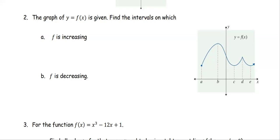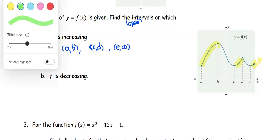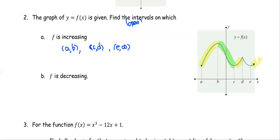For the second problem, the graph of y = f(x) is given; find the intervals on which f is increasing and f is decreasing. The increasing intervals, using a highlighter, are from A to B and from C to D, and then from E to infinity. The decreasing intervals are from B to C and from D to E. Written as open intervals, increasing: (A, B), (C, D), (E, ∞); decreasing: (B, C), (D, E).